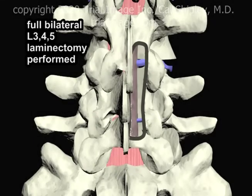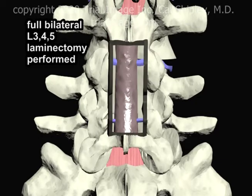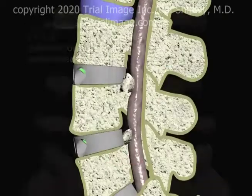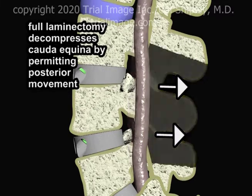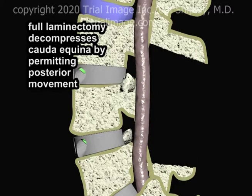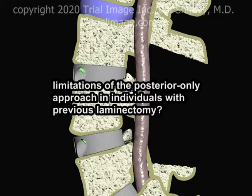The intertransverse fusion procedure is ideally suited to convert the previous partial hemilaminectomy to a full laminectomy, which results in decompression of the cauda equina. So far, so good. But in an individual with multilevel disc disease and a history of a previous hemilaminectomy, here is where the posterior-only approach begins to run into some limitations.